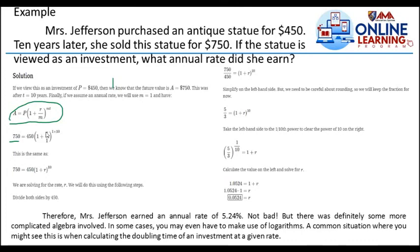So the amount after 10 years is $750, the principal is $450, 1 plus R all over 1 raised to annually times 10 years. That means we're looking for the interest rate, not the interest, the interest rate. So this is same as $750 equals $450 times 1 plus R raised to 10. We are solving for the rate R, we will do using the following steps. Divide both sides by $450.